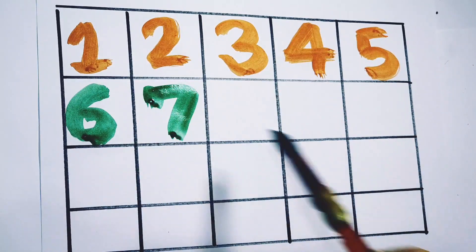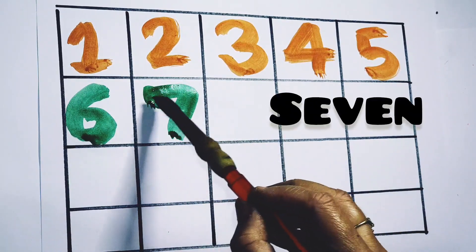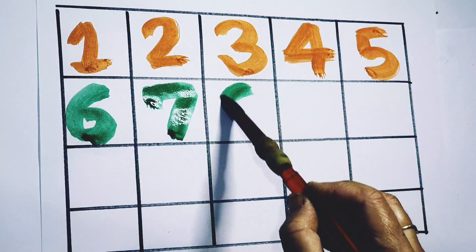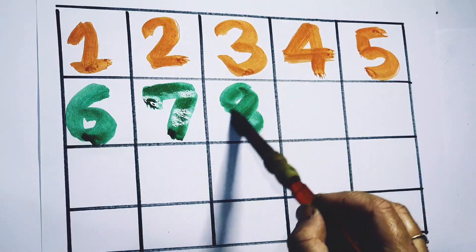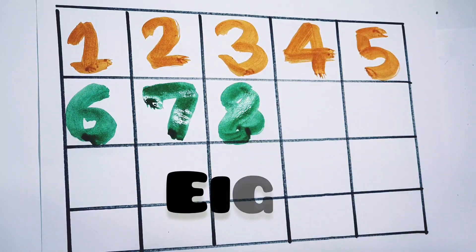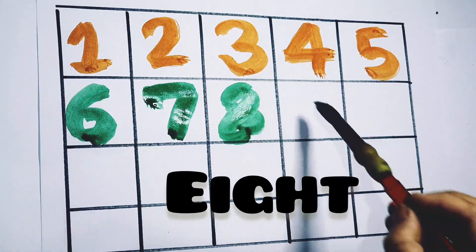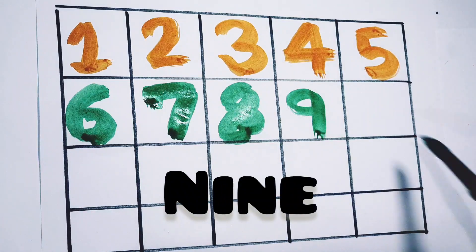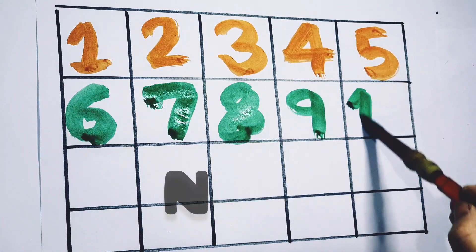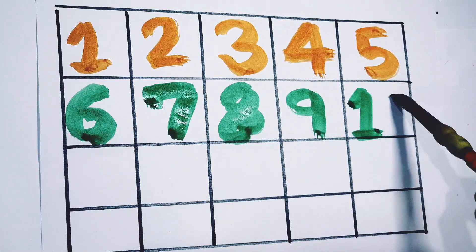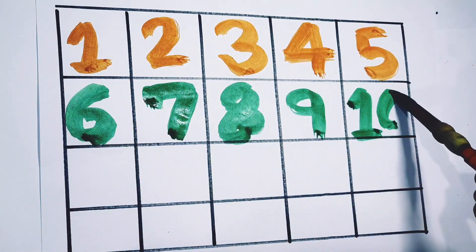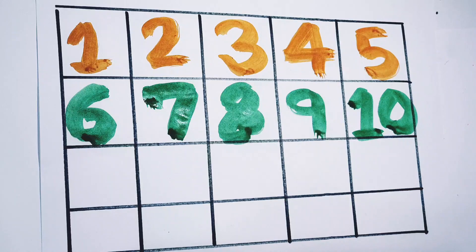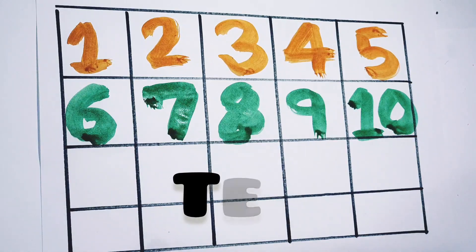7 — S, E, V, E, N — 7. 8 — E, I, G, H, T — 8. 9 — N, I, N, E — 9. 10 — T, E, N — 10.